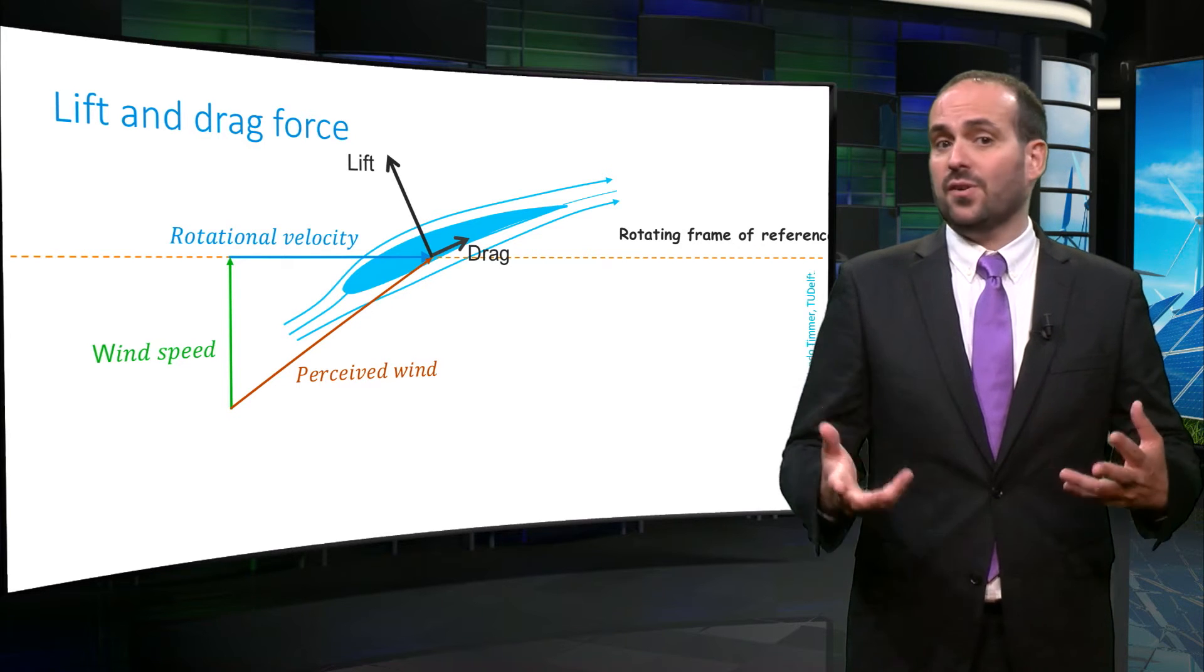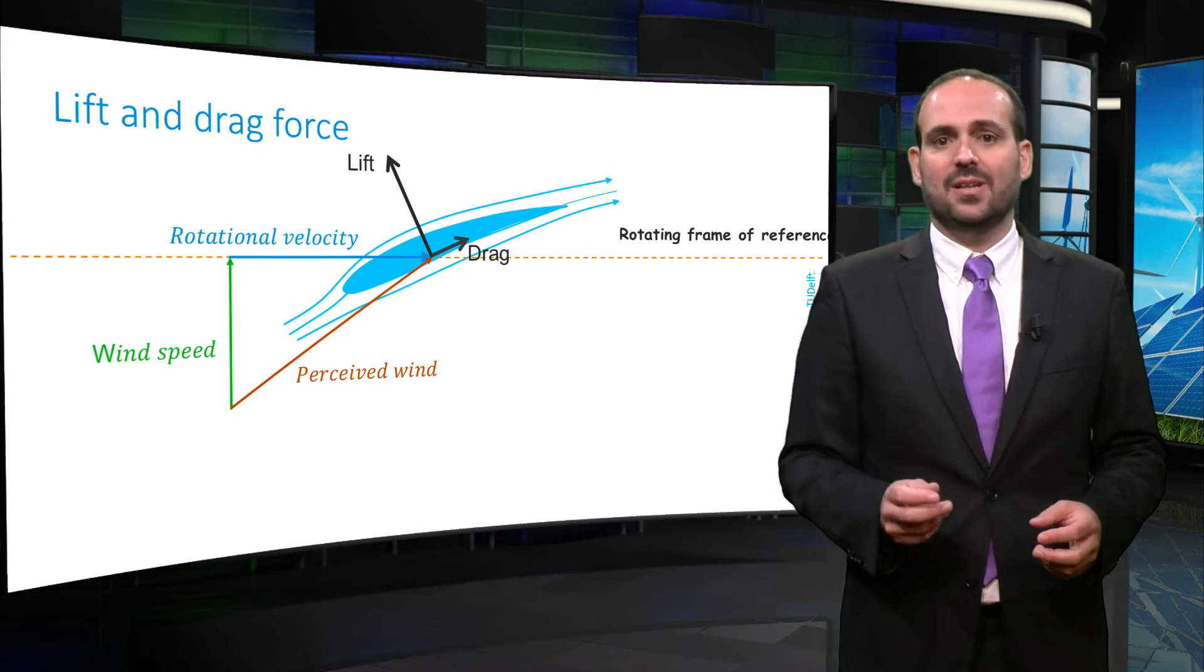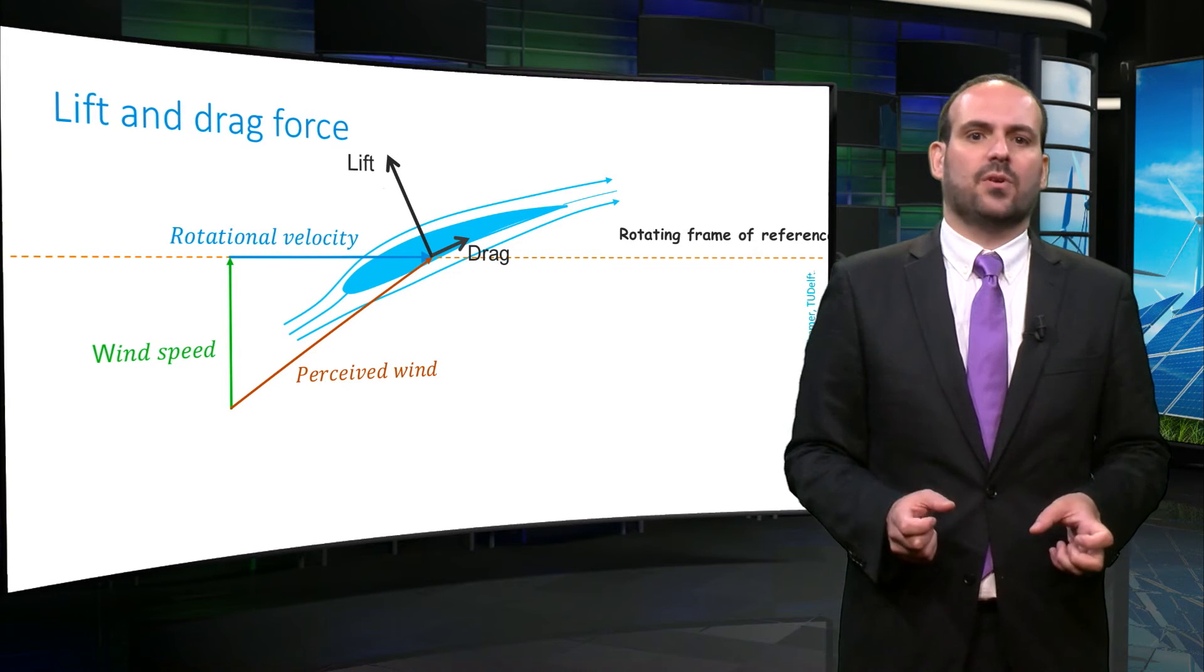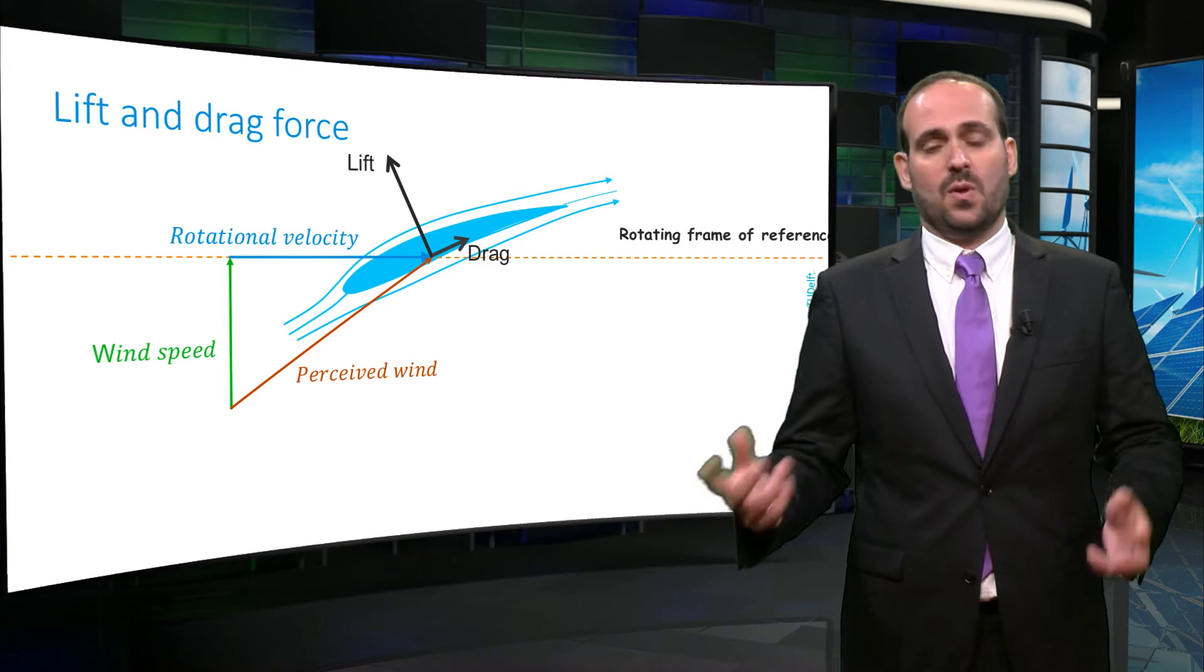Lift is the aerodynamic force that is perpendicular to the wind speed that the airfoil perceives. This perpendicular force is only possible if you create those microscale vortices on the surface of the airfoil that will create the wake of the wind turbine.